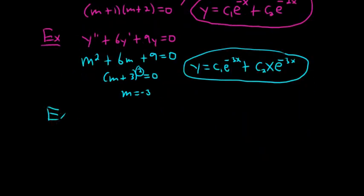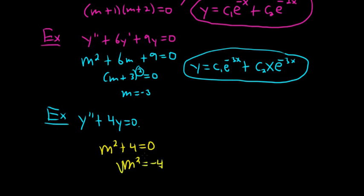And then one more. Say we had y double prime plus 4y equals 0. In this case, the characteristic or auxiliary equation would be m squared plus 4 equals 0. You would solve this. You would get m squared equals negative 4. Take the square root, so you get m equals plus or minus 2i. So you'd think of this as 0 plus or minus 2i, so alpha plus or minus beta i. So alpha would be 0, and beta would be 2.